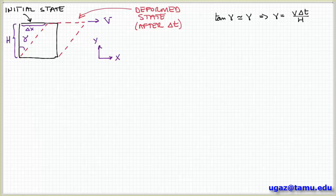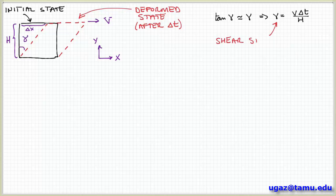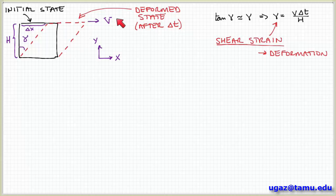Gamma gives us a way to represent the deformation. For this particular deformation associated with the shearing flow, which is driven by the sliding of the top surface with respect to the stationary bottom surface, this is often called the shear strain for this type of flow. Gamma is called the strain in general, and we can call it the shear strain for this shear-driven flow. This strain represents deformation.